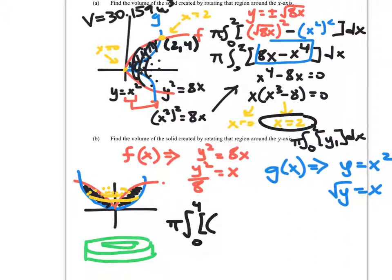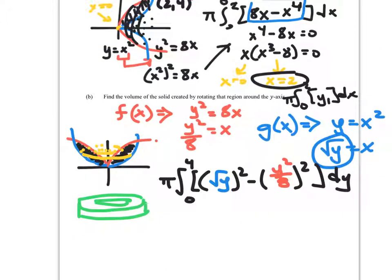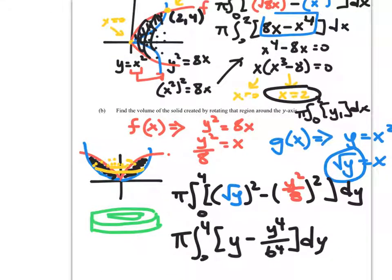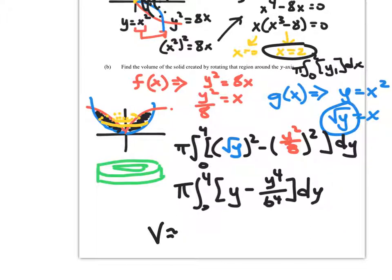Big R squared, which is the square root of y now, minus little r squared, which is y squared over 8 squared dy. So simplifying, I would rewrite, make it easier on yourself, and call this y minus y to the 4th over 64 dy, then go straight to the calculator. Alright, so the volume that I'm getting, according to my TI, is 15.079 units cubed.